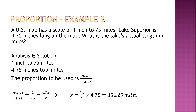Example 2: the map scale is 1 inch to 75 miles. Lake Superior is 4.75 inches long on the map. Use the proportion inches over miles: 1 over 75 equals 4.75 over x. Cross-multiply to find x. Using the shortcut method, what you want to find is 4.75 inches, so 4.75 divided by 1, times 75. You can just put it in the calculator and get the answer.